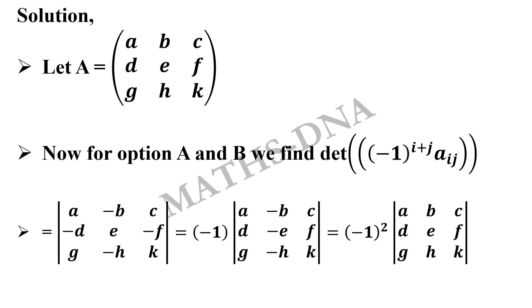When you take common or you multiply, you multiply that with each row or with that column, not for all the columns. So here you get it as determinant of A because minus 1 square is nothing but 1 itself. So it says that option A is true and option B is false because it was given that determinant is minus determinant of A.